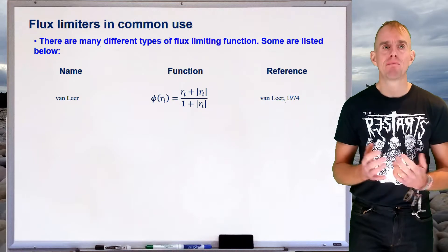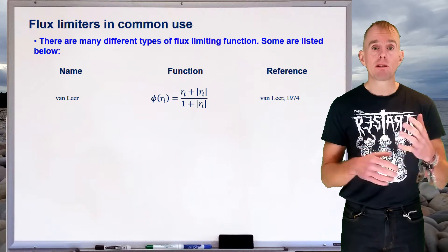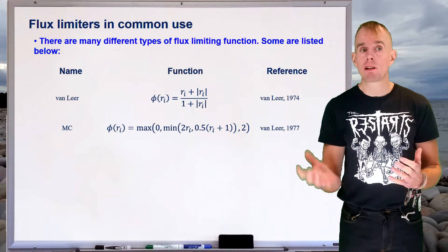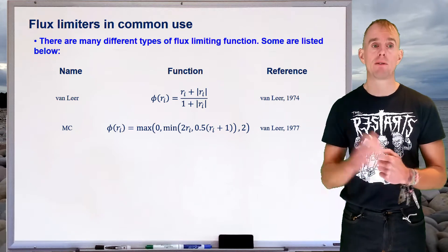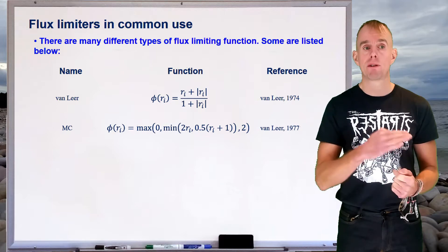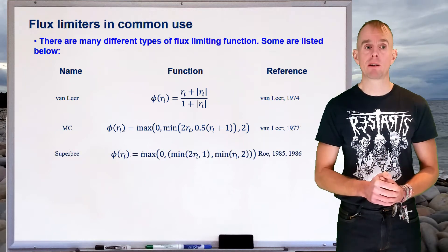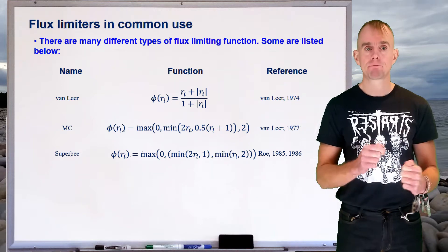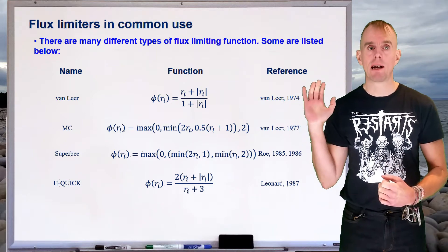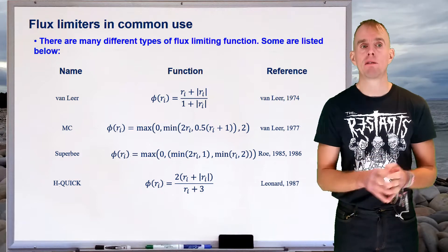There are many different flux limiting schemes in common use. We've described the van Leer flux limiter, first invented in 1974. The flux limiting function always varies between zero and two — it's what happens in the transition region according to the gradient sensor that differs. You find the MC flux limiter, another of Professor van Leer's formulations from 1977, uses a simple min/max function. Roe came up with the Super B flux limiter in the mid-80s, also written as minima and maxima. And Leonard in 1987 came up with a modified version of the QUICK algorithm that is also flux limiting in nature. The take-home message is that there are many different flux limiting formulations, but they all operate in a very similar way.